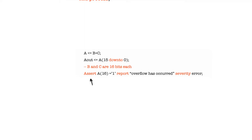This concurrent assert is going to look at the value of A(16) of the bus A. If it sees that this value is 1, it will report the message "overflow has occurred" and this message will be of severity level error. After writing the assert statement, what you write between assert and report is a condition — anything that reduces to a boolean value. If this condition is evaluated to be true, then the report string is printed to the terminal.